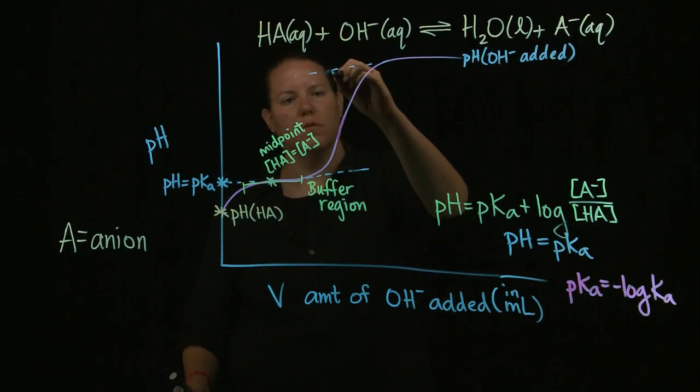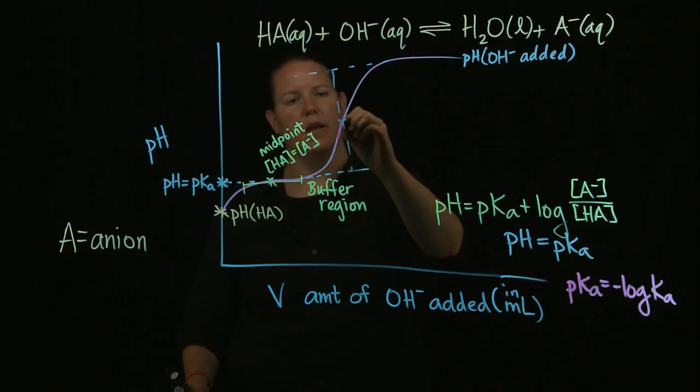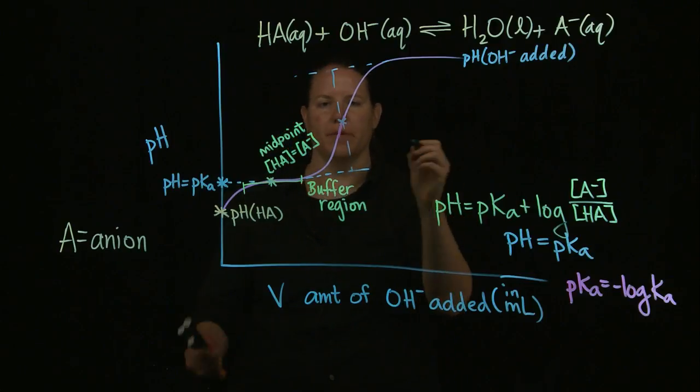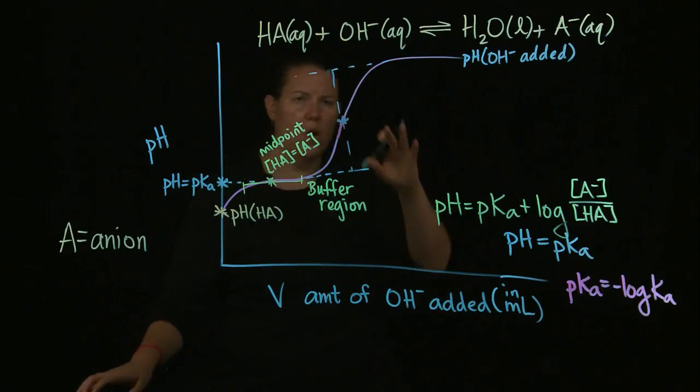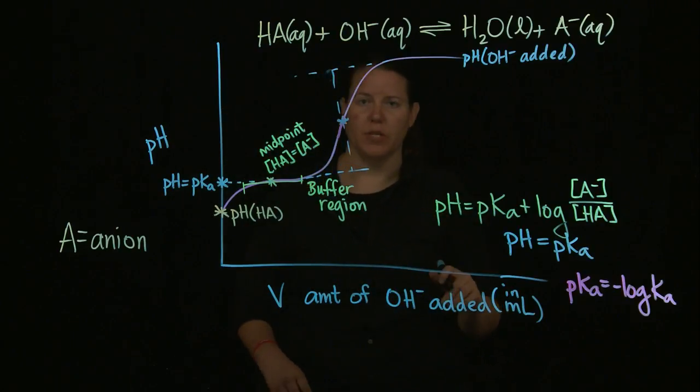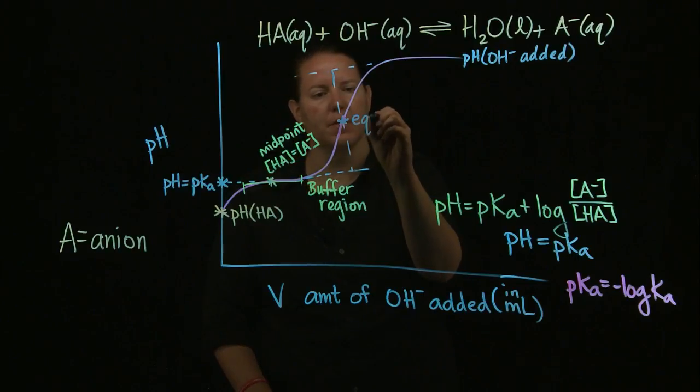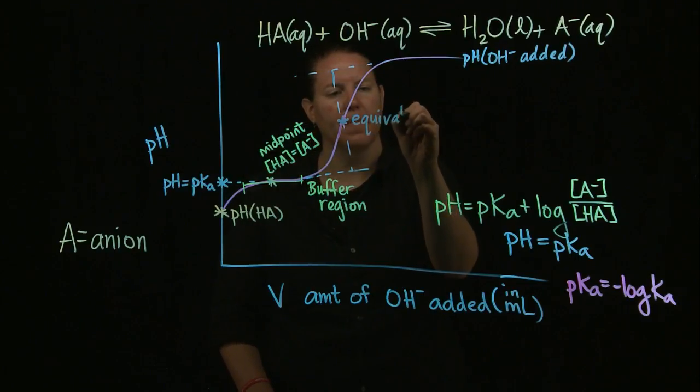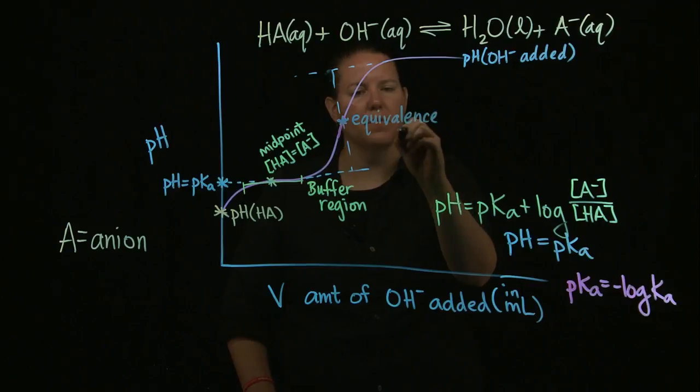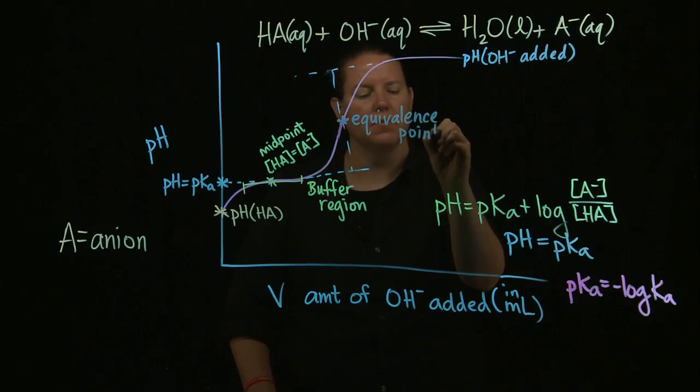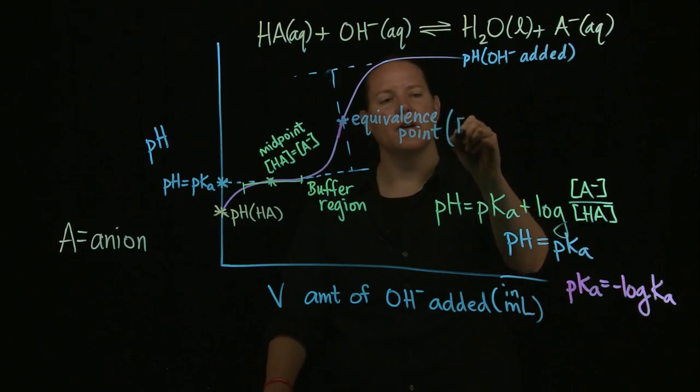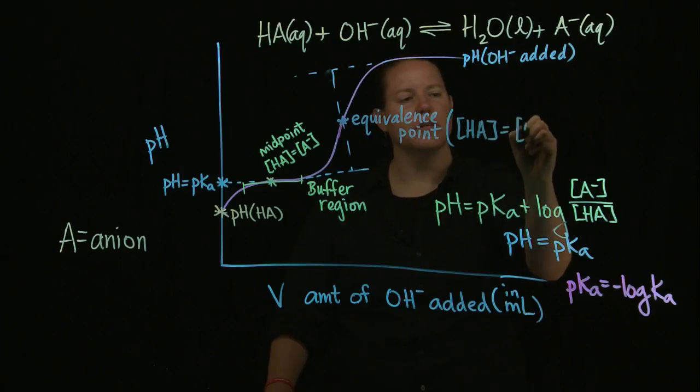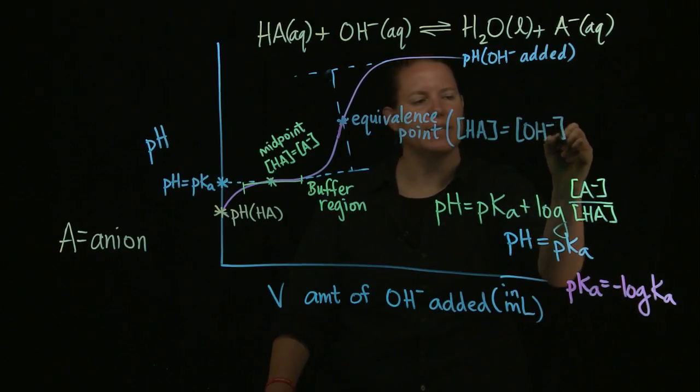So there you go. What is that point that I've just marked here? This point is called the equivalence point. The equivalence point is where something is equivalent. The equivalence point here is where the concentration of the acid is equal to the concentration of the base added.